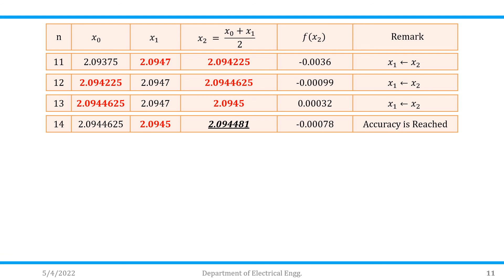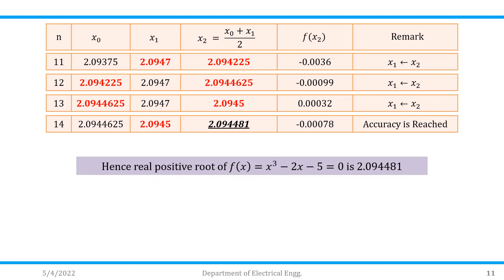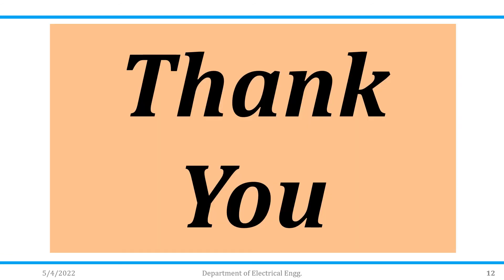As it is correct up to four decimal places, observing iteration 13, we get 2.0945 and then 2.0944. Since the desired accuracy is achieved, the answer for this equation is 2.0944. I hope this is clear. If you have any doubts, please feel free to ask. Thank you for watching.